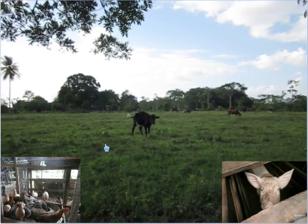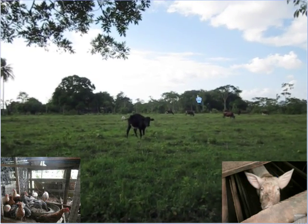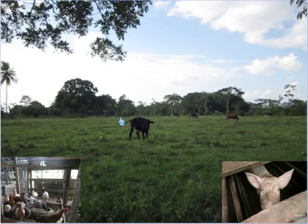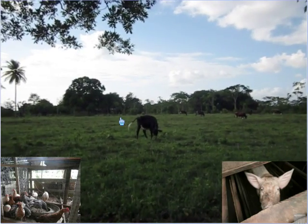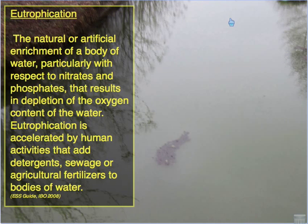Other human-induced sources of nutrient enrichment include waste running off from chicken farms, cattle farms, pig farms, and any such areas into aquatic systems, adding nutrients to the aquatic environment and leading to the problem of eutrophication. Eutrophication is defined as the natural or artificial enrichment of a body of water, particularly with respect to nitrates and phosphates.